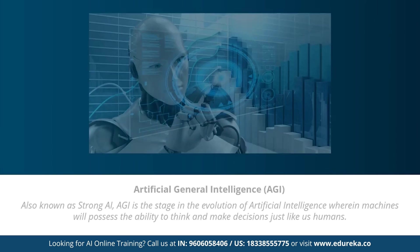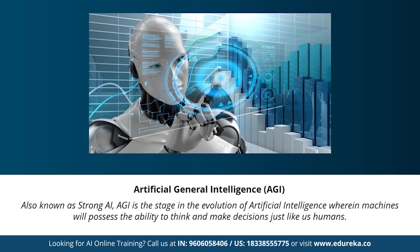Next we have artificial general intelligence, also known as strong AI. This stage is the evolution of artificial intelligence, wherein machines will possess the ability to think and make decisions just like human beings. There are currently no existing examples of strong AI, but it's believed we will soon be able to create machines as smart as humans. Strong AI is considered a threat by many scientists, including Stephen Hawking, who stated that the development of full artificial intelligence could spell the end of the human race.